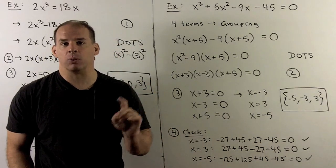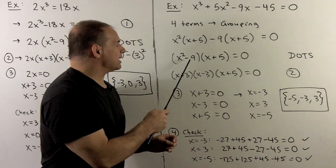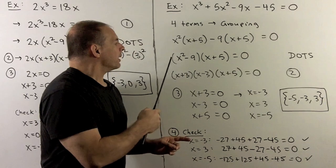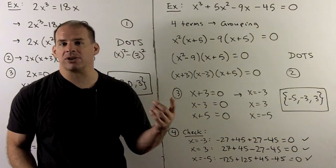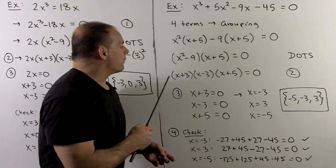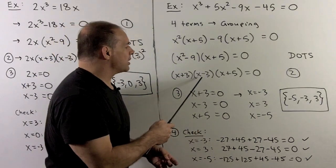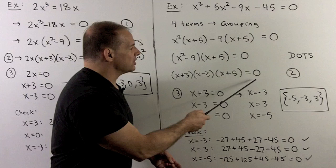So we pull out the x plus 5, and what's left over is x squared minus 9. Now, that's the difference of two squares. We saw that in the previous problem. So that will factor as x plus 3, x minus 3. Our factorization is x plus 3, x minus 3, x plus 5. That's equal to zero.